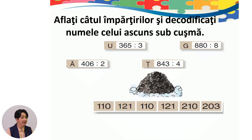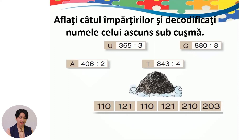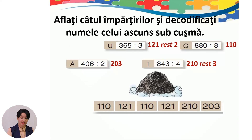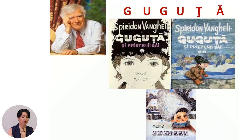Bravo, copii! V-am pregătit o sarcină deosebită: aflați câtul împărțirilor și decodificați numele celui ascuns sub cușmă. Aflați treimea numărului 365; câtul numerelor 880 și 8; jumătatea numărului 406; împărțitul este 843, împărțitorul 4, aflați câtul. Controlăm rezultatele: litera U — 121 rest 2; G — 110; Ă — 203; Č — 210 rest 3. Bravo, copii! Ce cuvânt ați obținut? Cu siguranță Guguță!